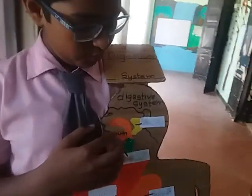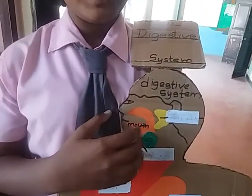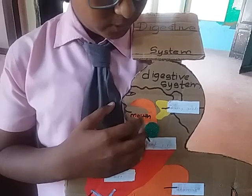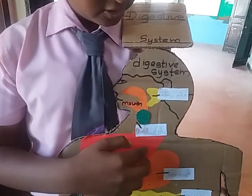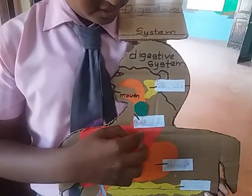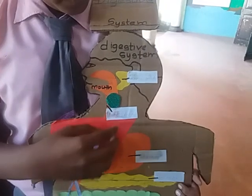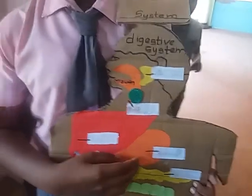If we eat the food, the teeth will help to break the food into small pieces and go into the esophagus. That is called food pulp, and it is pushed to the stomach.